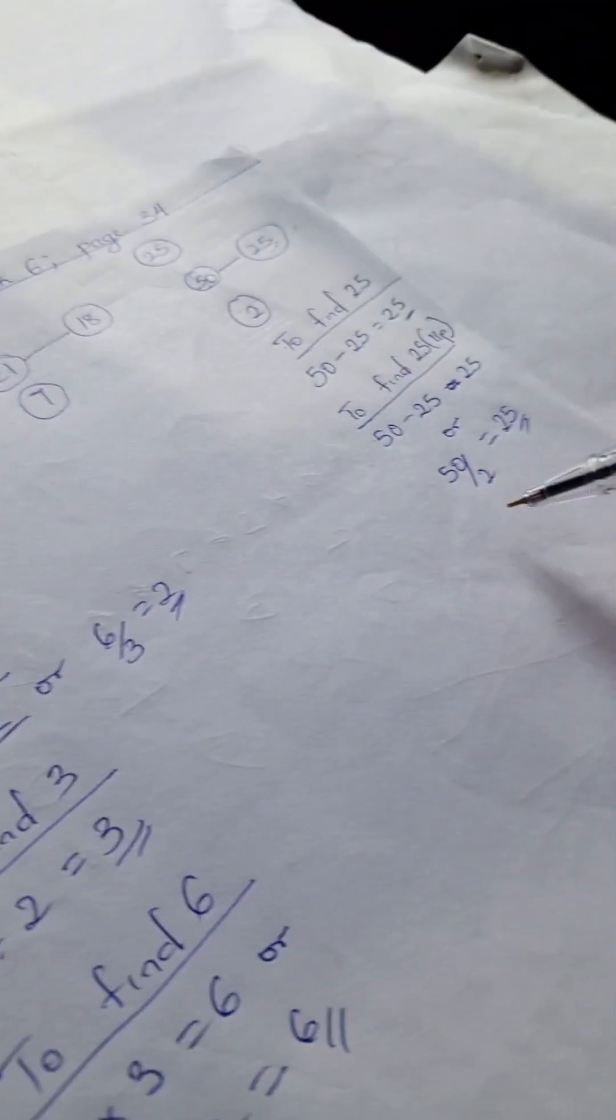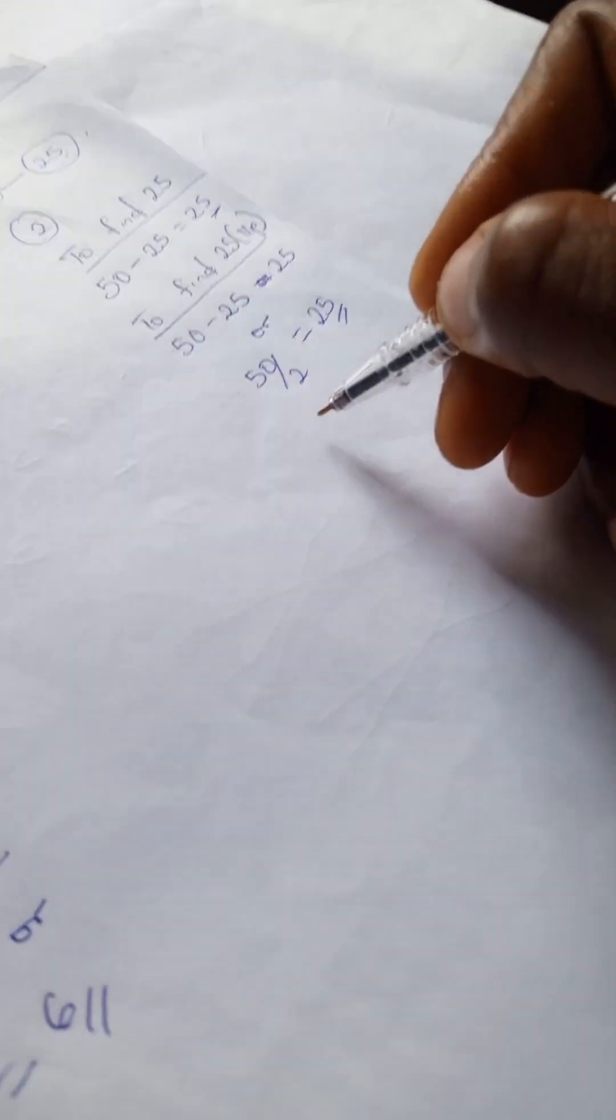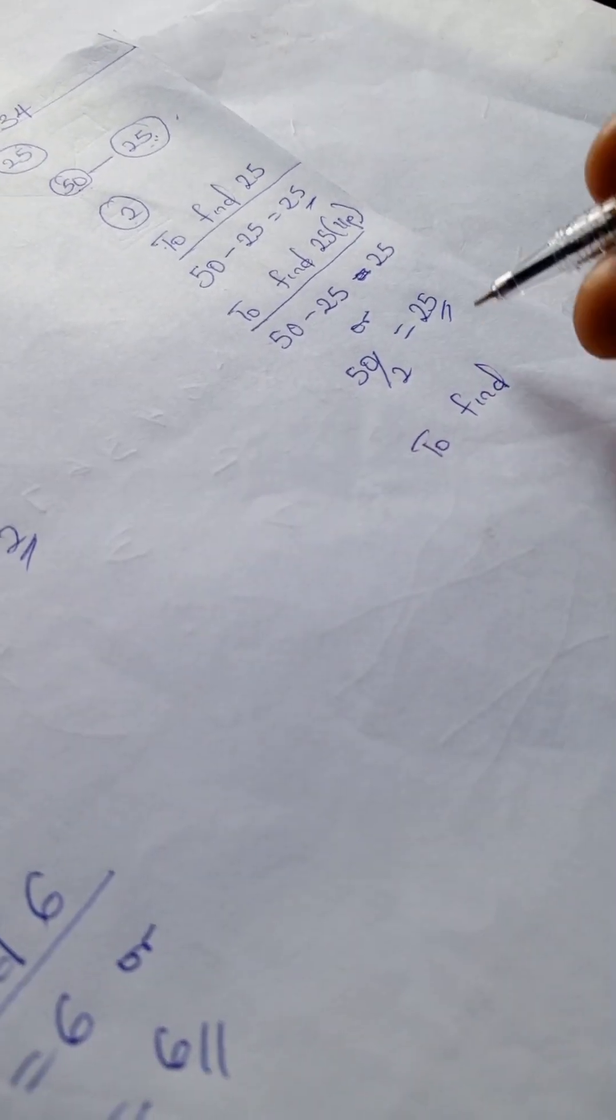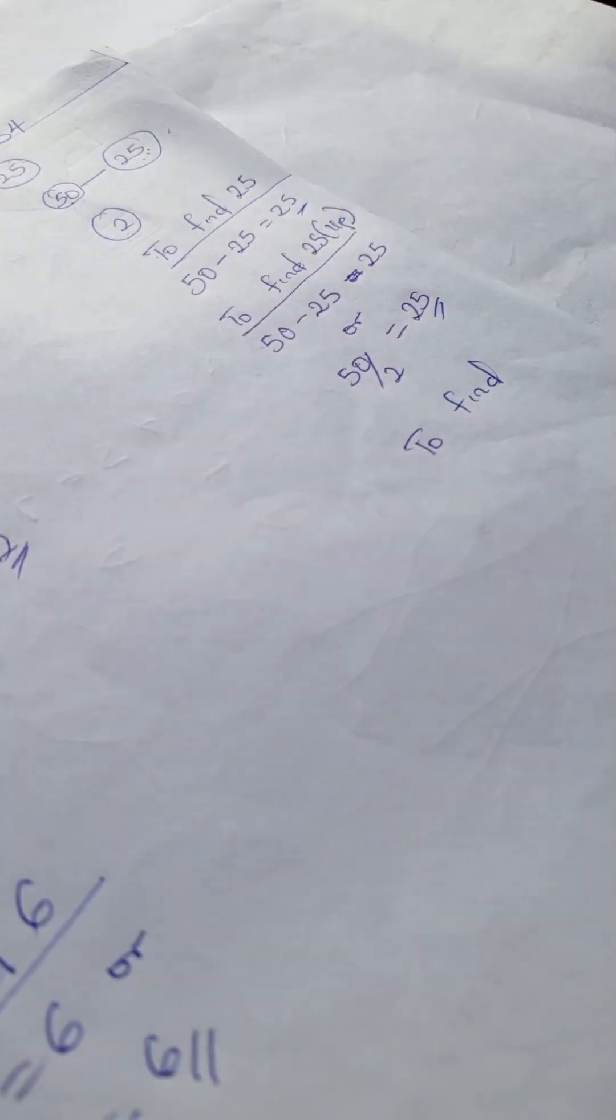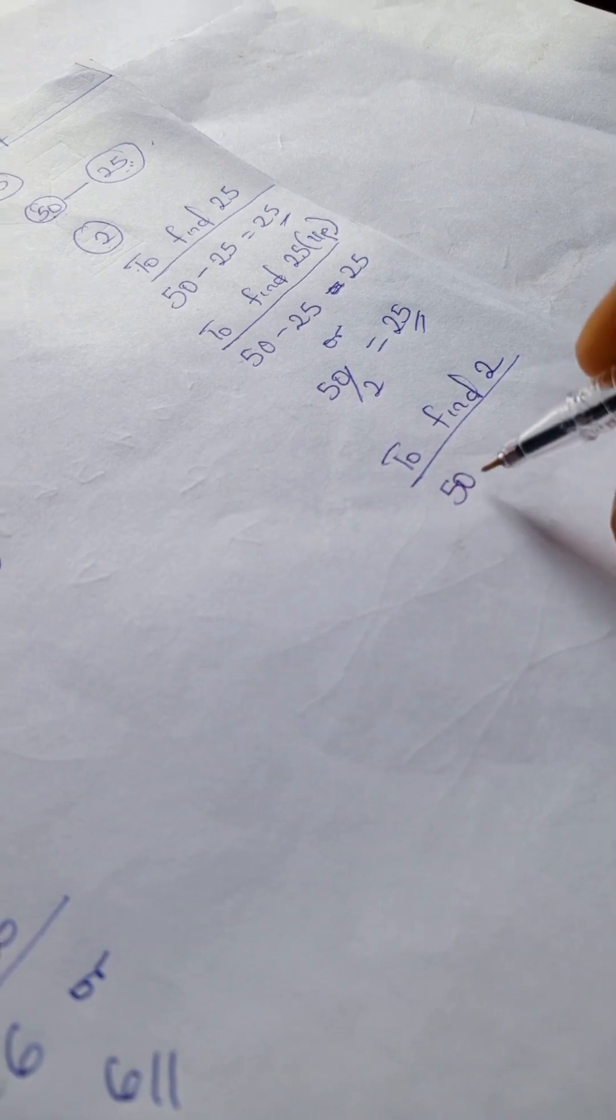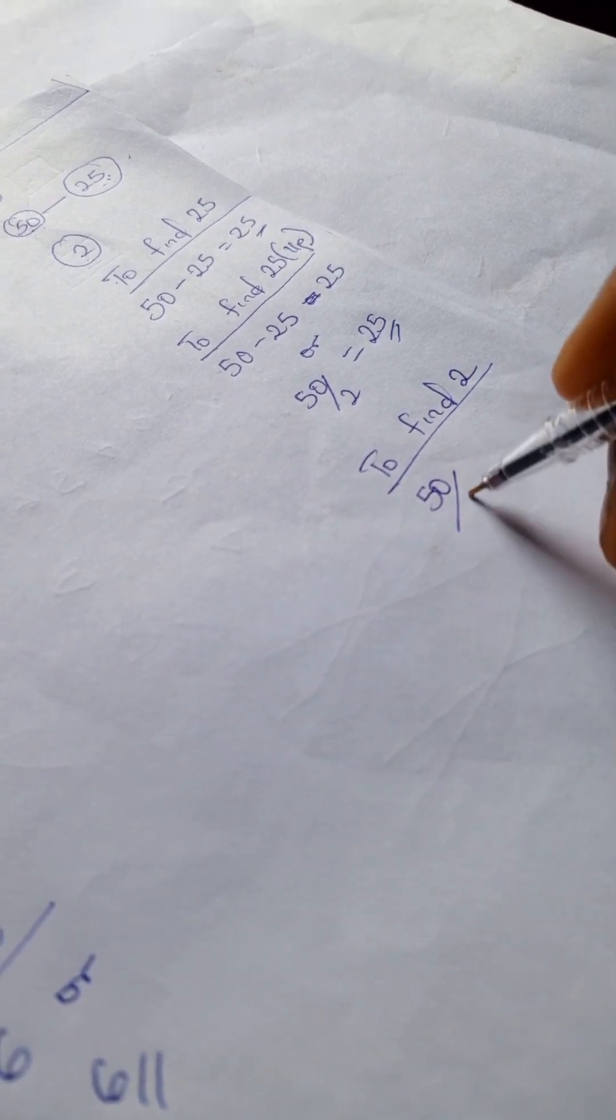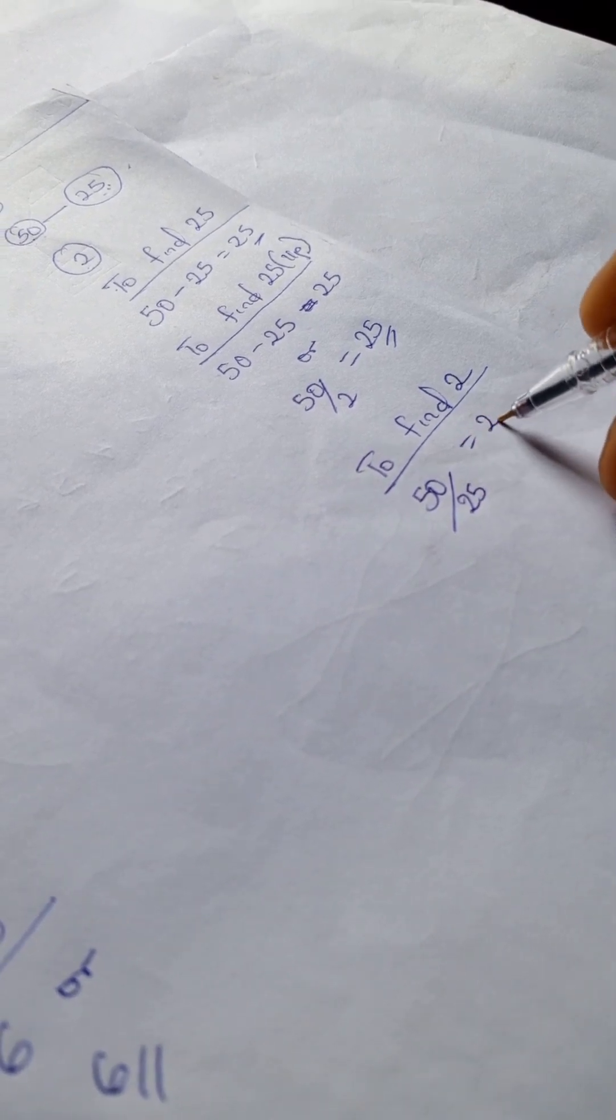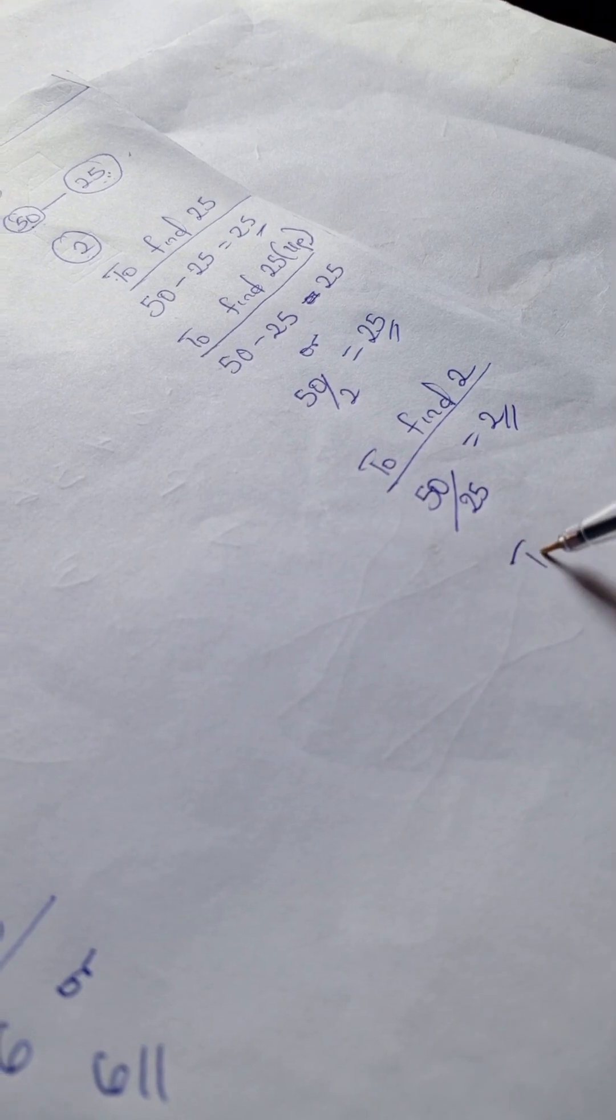You have your 2. So to find this 2, we have 50 divided by 25, that gives us 2.